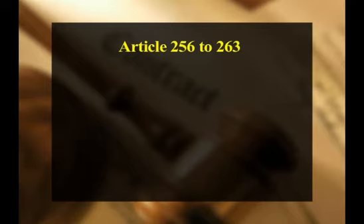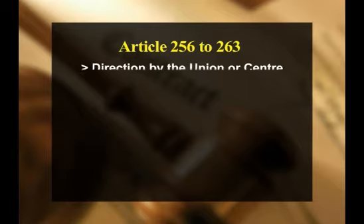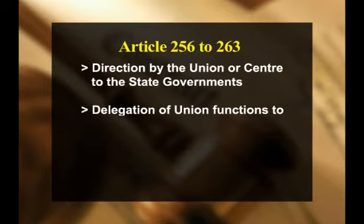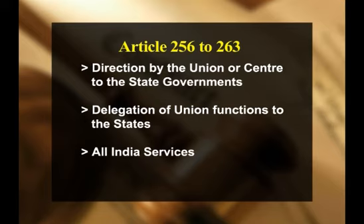Articles 256-263 of the Indian Constitution provide for union control over states through the following ways: first, direction by the union or centre to the state governments; second, delegation of union functions to the states; and third, all India services and grants in aid.